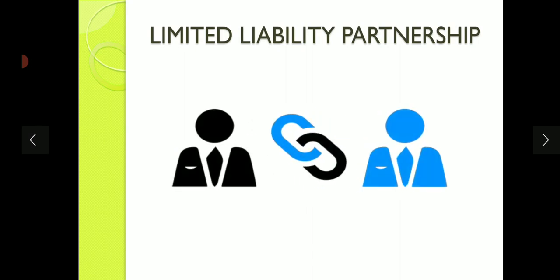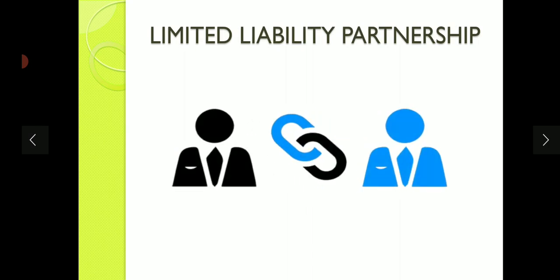Now as we can see by the name, we have studied that there are unlimited liabilities in partnership. That means partners can also use their personal assets to pay for business liabilities. But here it is called limited liability partnership, so by the name we can say that liabilities here are limited, not unlimited.